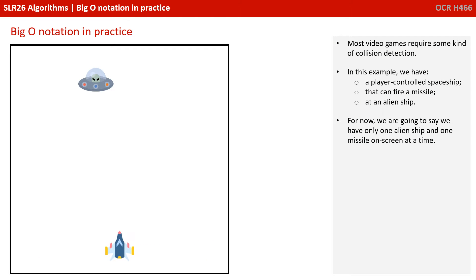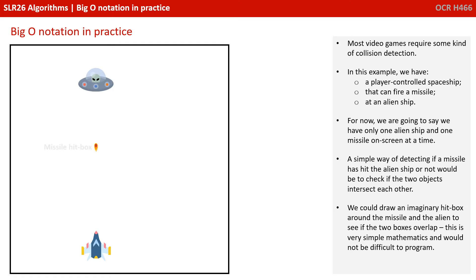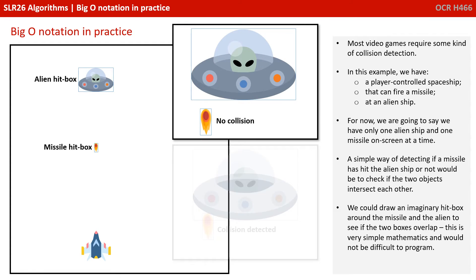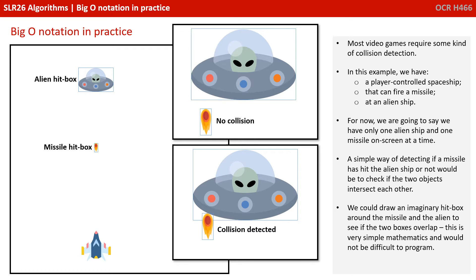Most video games require some kind of collision detection. In this example, we have a player controlled spaceship that can fire a missile at an alien ship. For now, we're going to say we only have one alien ship and one missile on screen at a time. A simple way of detecting if a missile has hit the alien ship would be to check if the two objects intersect each other. We could draw an imaginary hitbox around the missile and the alien to see if the two boxes overlap. This is very simple mathematics and would not be difficult to program.